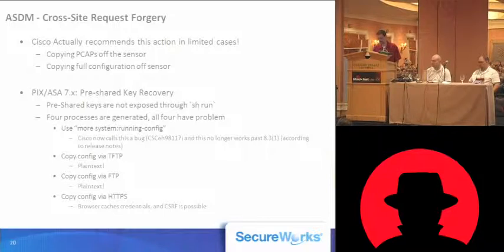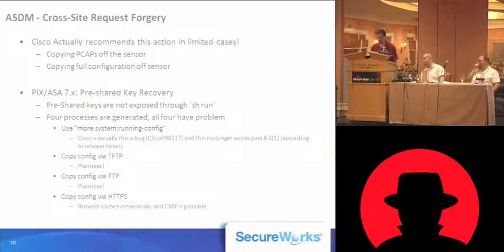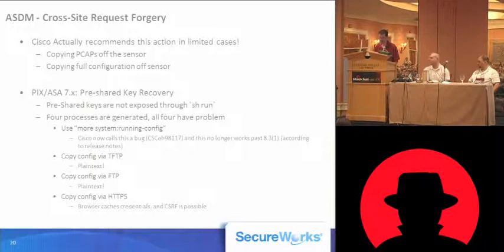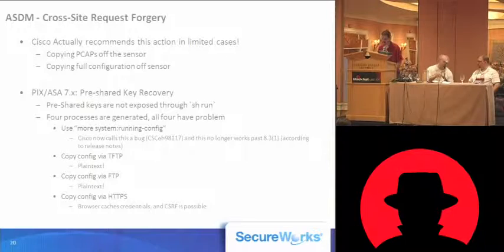Their last option is to download the config via HTTPS by connecting your browser to the ASA with the /config directory. That option will make your browser susceptible to cross-site request forgery. Each of these methods described in this article are inherently flawed, yet they are Cisco's recommended methods.